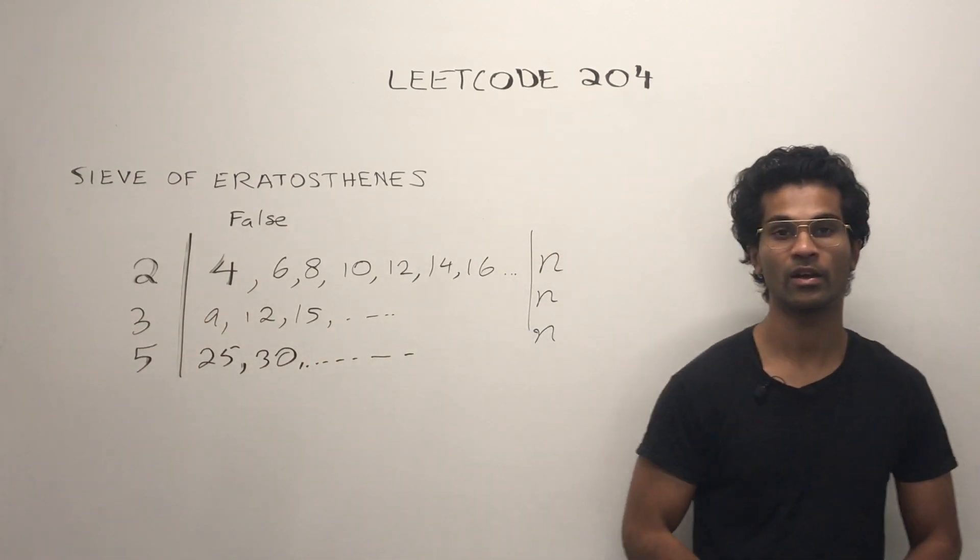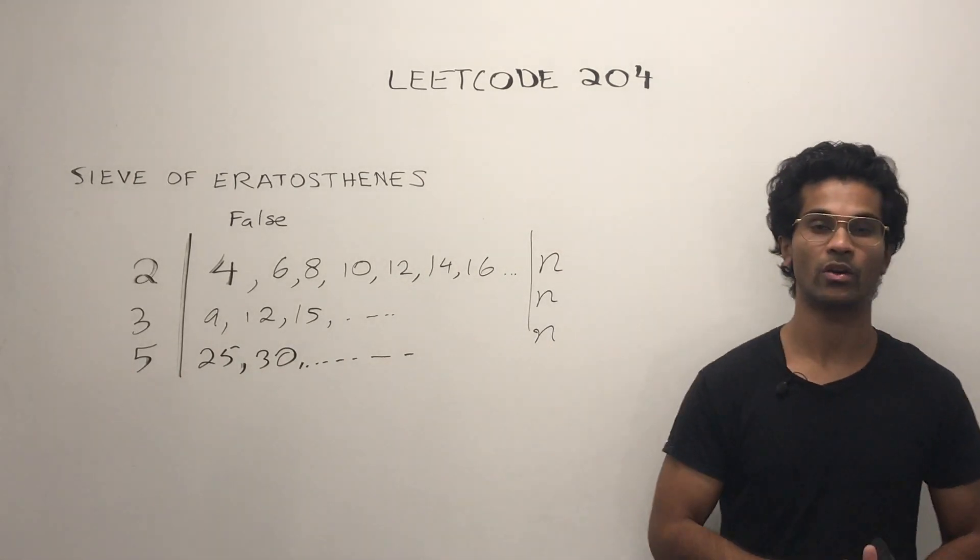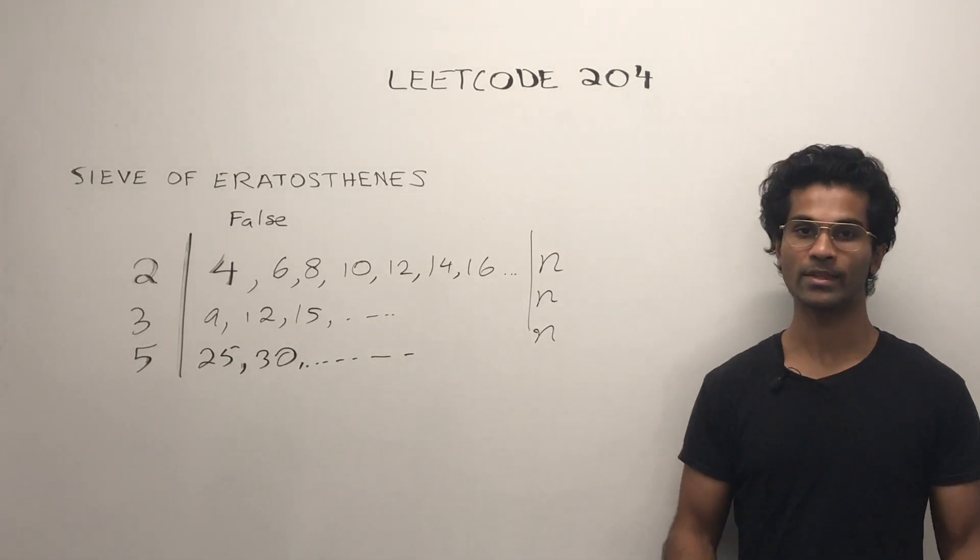So 2, 3, 5. We keep checking until the square of that number is less than or equal to n. Why do we do that?